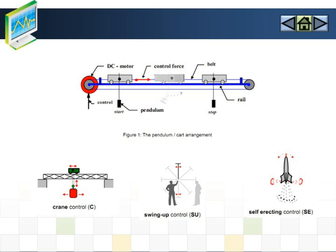The Inverted Pendulum and Cart (IPC) system is a non-linear and unstable system. Thus, it is not as easy as controlling a linear and stable system. It is used to illustrate many of the ideas in the field of non-linear control systems. These systems can be found in rocket launchers and the development of humanoid robots. The dynamics of the system form the basic research used to test methods of control.